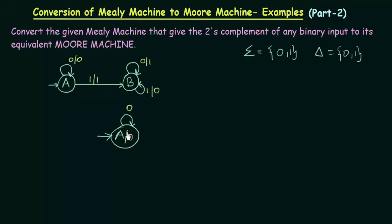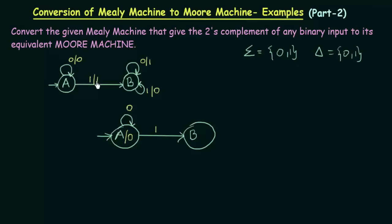We have mentioned what happens to A when it gets input 0. What about when it gets input 1? When A gets input 1, it goes to B and the output associated is 1. So here I will make state B, send A to B when it gets input 1, and associate this output 1 to state B. So state B gives output 1. We have now completed state A.